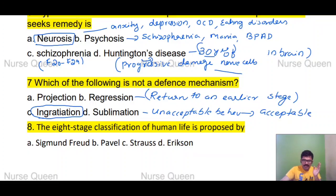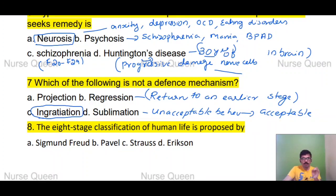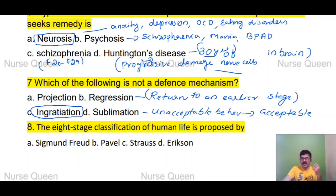For example, a person who is very physically active and used to behave aggressively — like a 'gunda' — channeled that energy into exercise and joined the army. That is sublimation: converting unacceptable behavior into something acceptable.